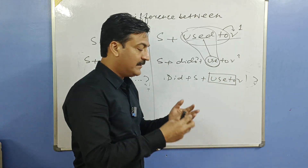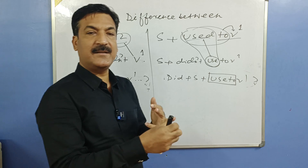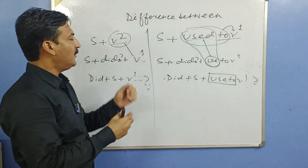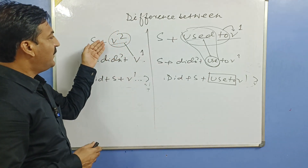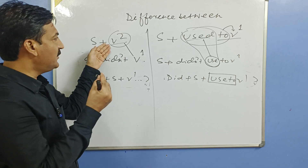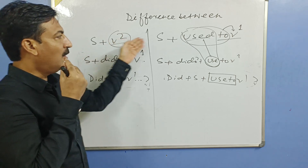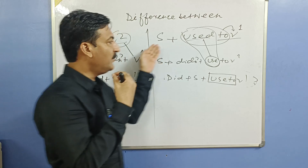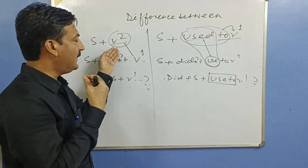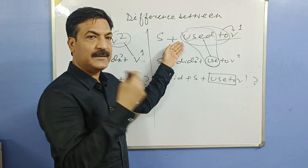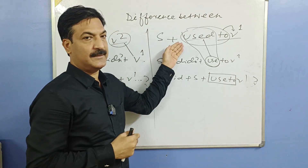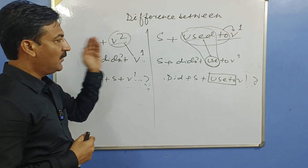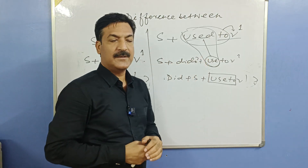Is that clear? Toh teen tarah ke sentences honge: positive, negative, and interrogative. Ek baar phir dekho: agar sirf past mein one-off action ki baat karein toh V2; aur baar baar ki baat karein toh 'used to'. One-off action Hindi mein hoga 'kiya' ya 'kiya tha'; aur 'used to' ka hoga 'kiya karta tha' ya 'karta tha'. Negative mein: did not + V1; aur yahan did not use to + V1.